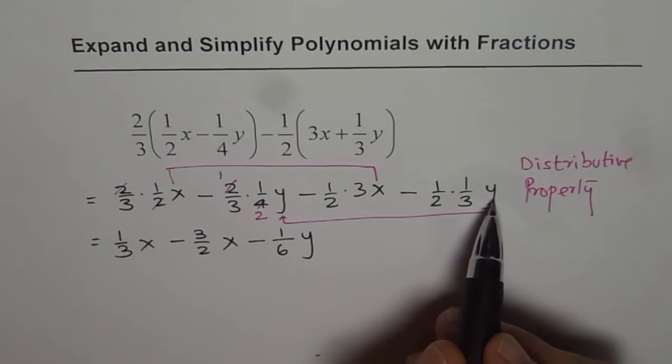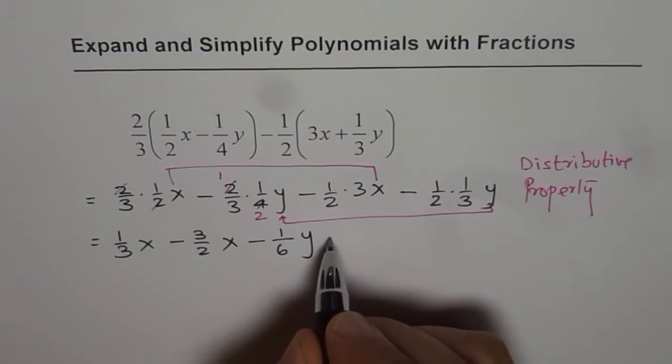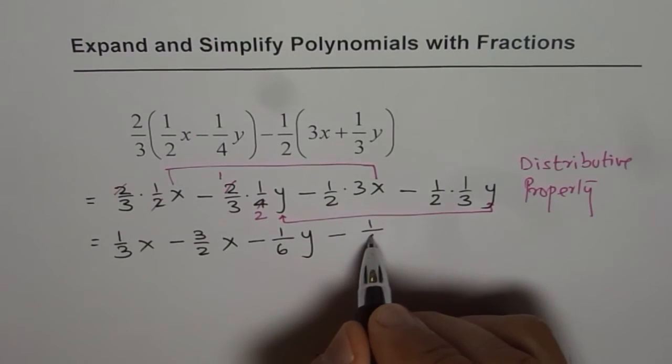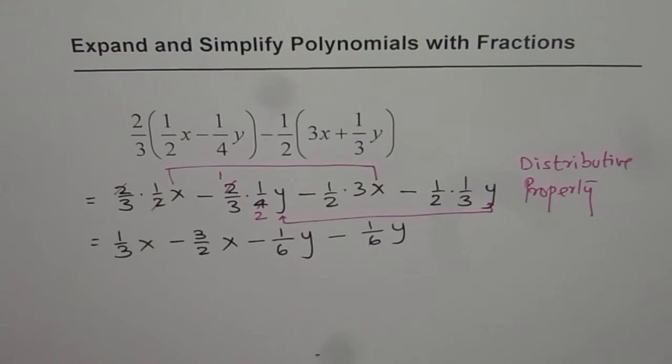The coefficient of y in this case is minus 1 over 6, 1 over 6y. So that is how we get our polynomial.